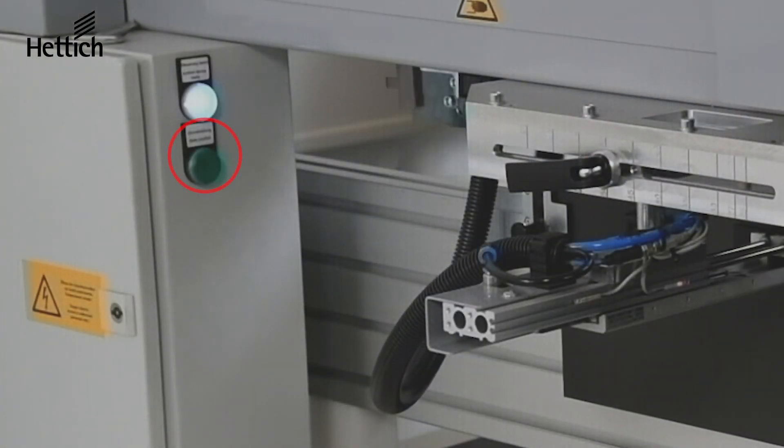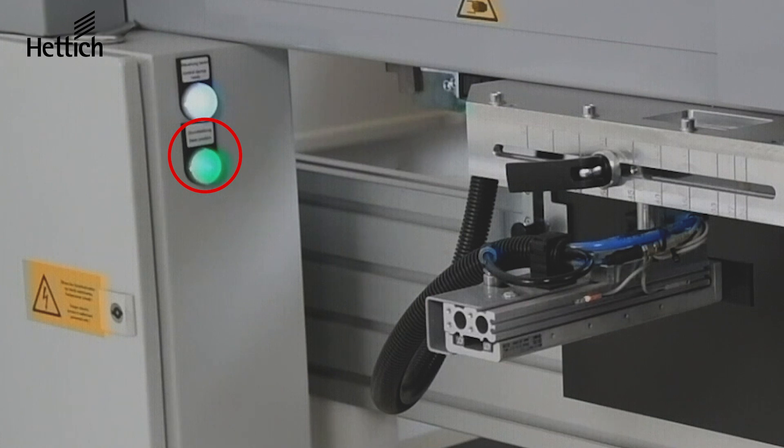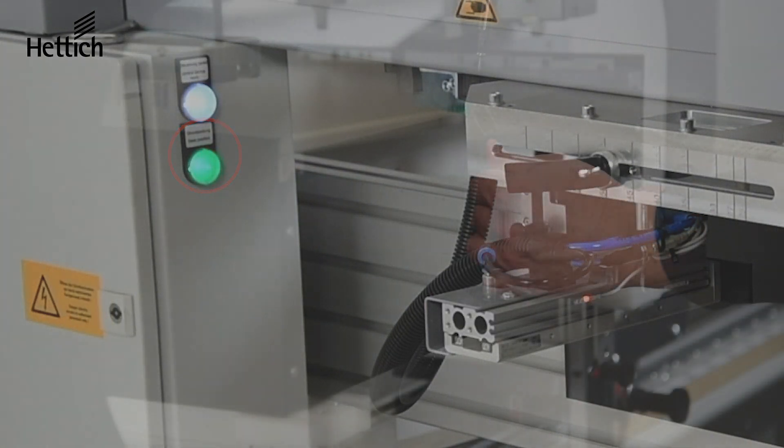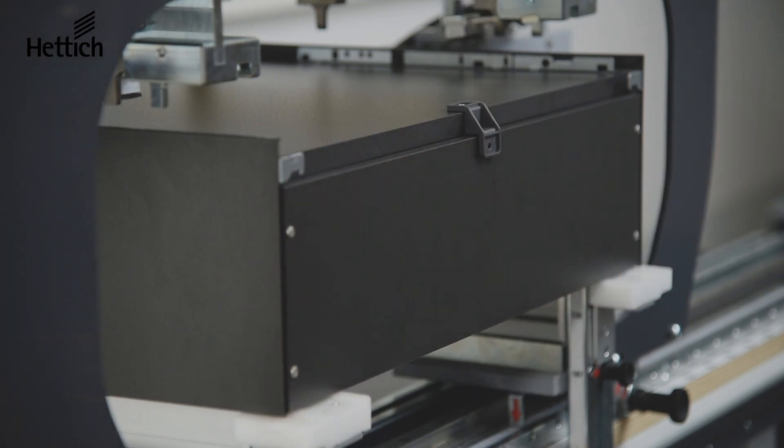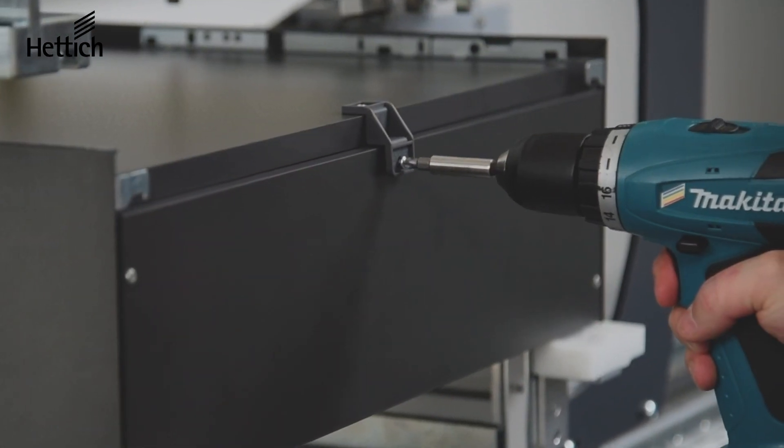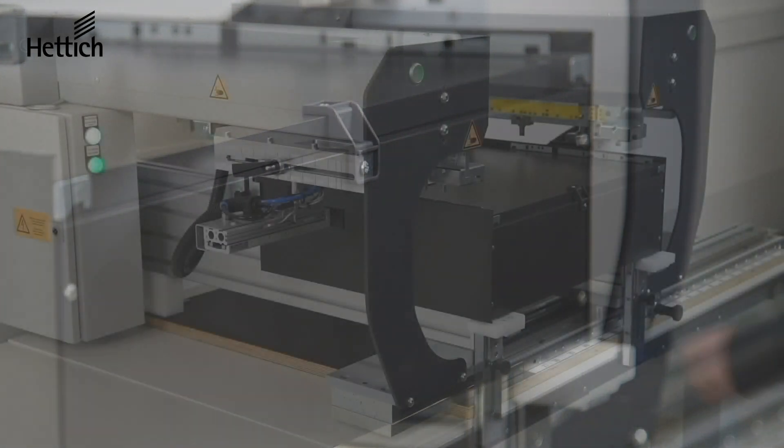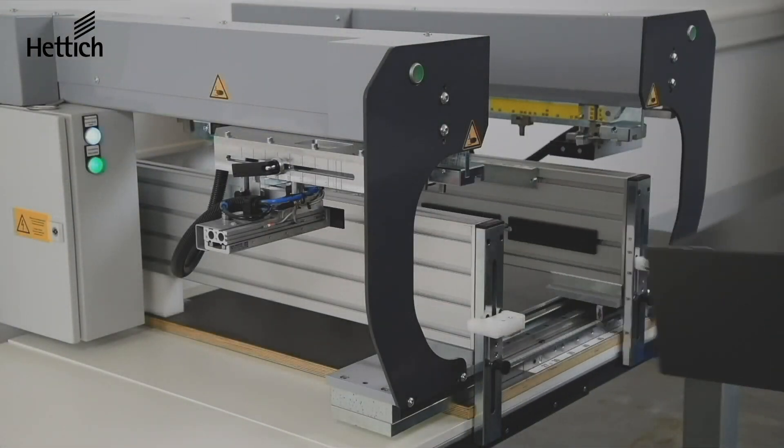If using the rear stabilizer, you can attach it to the drawer at this time. The drawer is now assembled. Take it out of the machine and inspect it to ensure the back panel and profiles are flush with each other.